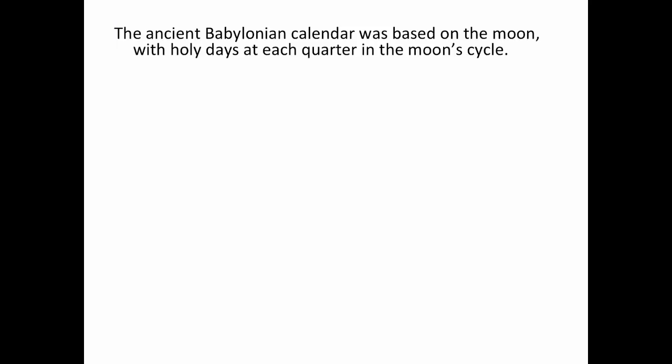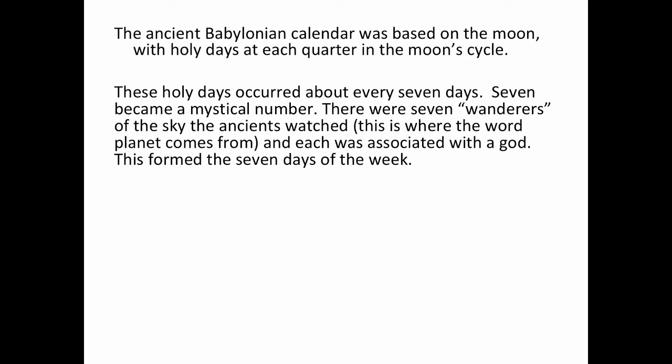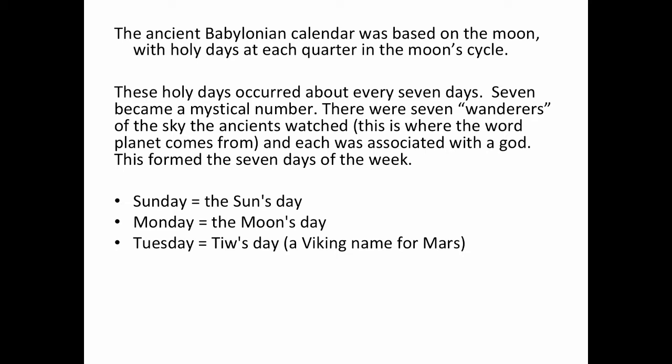The ancient Babylonian calendar was based on the moon, with holy days at each quarter in the moon cycle. These holy days occurred about every seven days, so seven became a mystical number. There were seven wanderers of the sky the ancients watched — this is where the word planet actually comes from — and each was associated with a god. This formed the seven days of the week. Sunday represented the sun's day, and Monday was the moon's day. Tuesday in English derives from Tiw's day, which was a Viking name for Mars, because English also has origins in the Norse language.